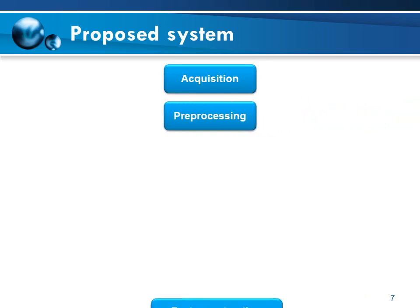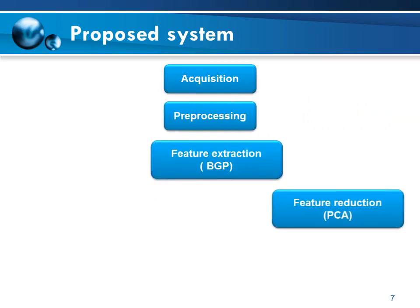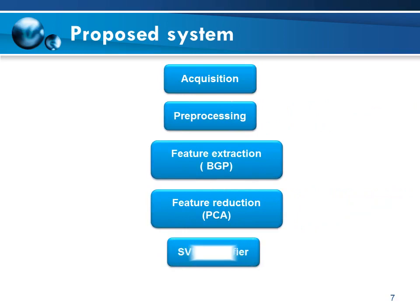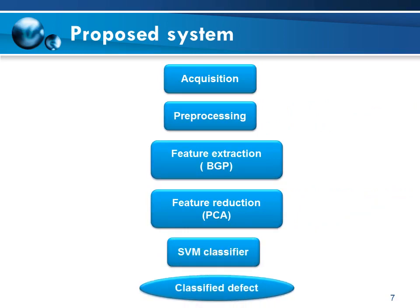The proposed system consists of four major steps. After image defect acquisition, the first step is pre-processing of the defect image based on contrast enhancement. The second step is extraction of image texture features using the Binary Gabor Pattern descriptor. In the third step, Principal Component Analysis is applied to the BGP descriptor to reduce the dimensionality of the feature vector. Finally, an SVM multi-class classifier is used to classify the different steel surface defects.